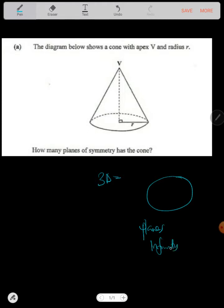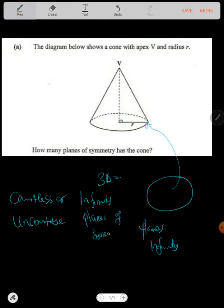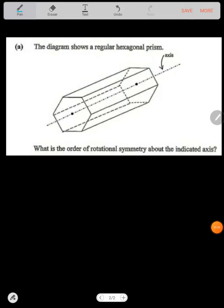Because this has a circle, even this one is going to have countless, or can say infinity, or you can say uncountable planes of symmetry. That's the answer.